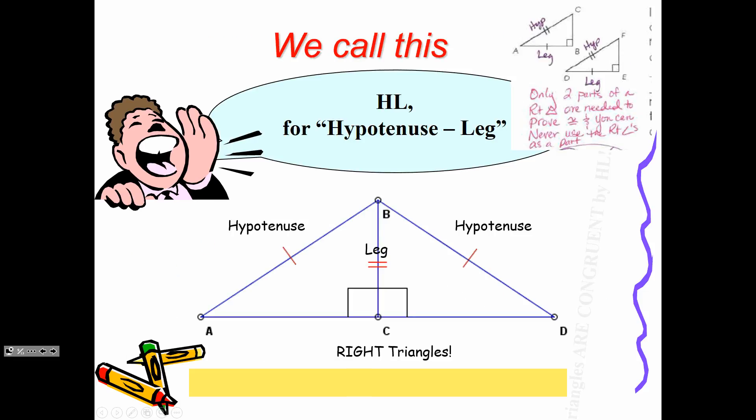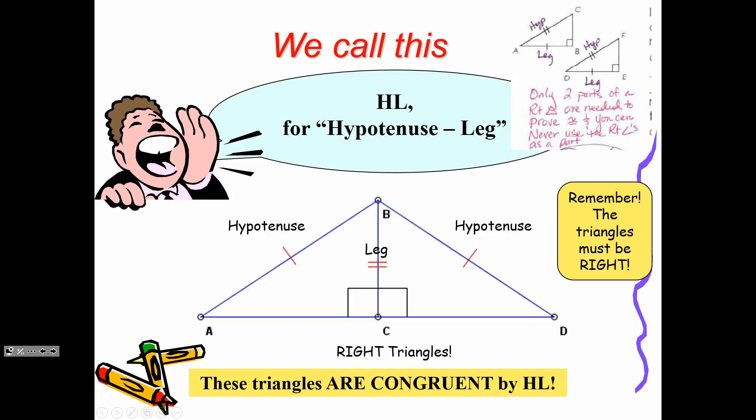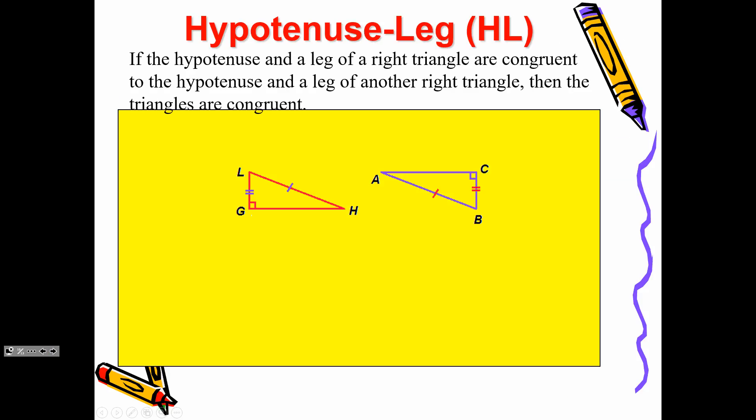For Hypotenuse-Leg, this is the only one we can use with right triangles. There are two parts: you have your legs — the sides that make the right angle — and you have your hypotenuse. Make sure you identify your hypotenuse as the side opposite the right angle. Sometimes we rotate right triangles and you still have to identify that. If I have a hypotenuse and a leg that they share — that's a reflexive statement — we call that Hypotenuse-Leg. We only use HL with right triangles.